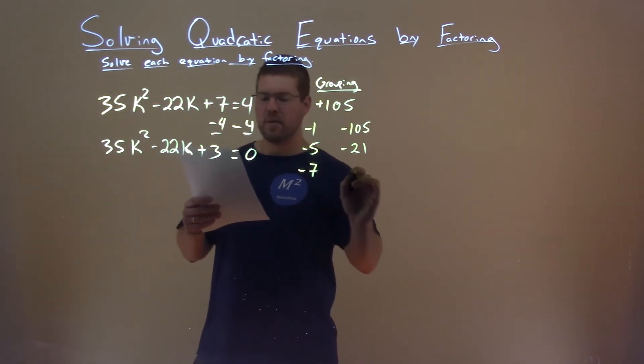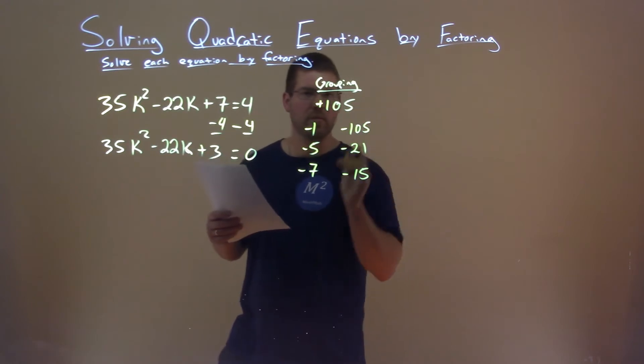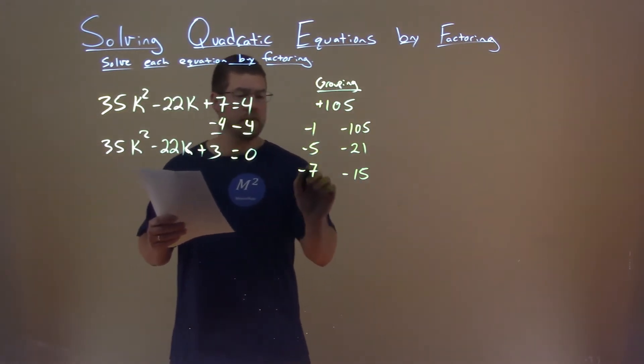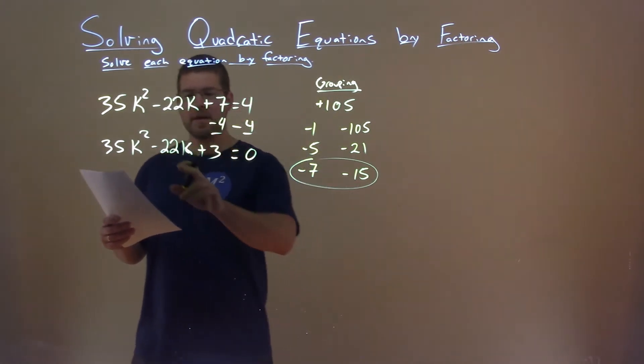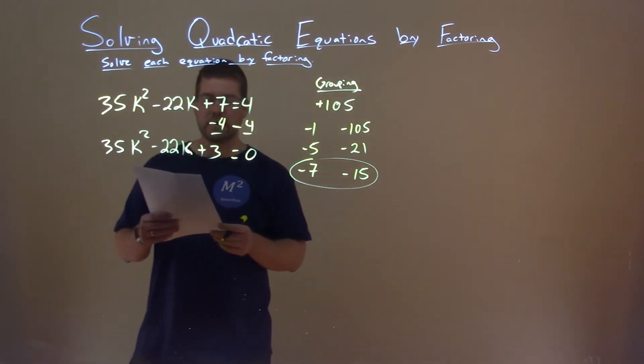Negative 7 times negative 15, going through possible numbers, is my golden ticket. Negative 7 times negative 15 multiplies to be positive 105, but adds to be negative 22.